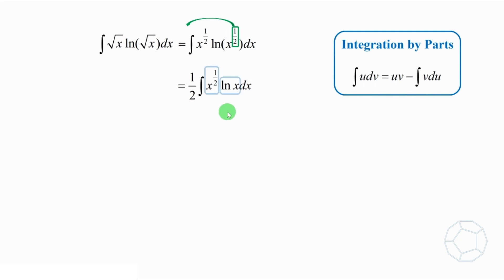Now, we have to decide which term to be absorbed into the differential. Because x to the power of 1 over 2 is algebraic function A, log x is logarithmic function L, by the LIATE rule, L is in front of A. So, L is u and A is dv. In other words, we have to absorb x to the power of 1 over 2, that is, to integrate it.